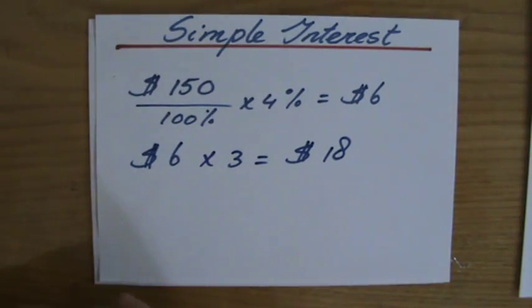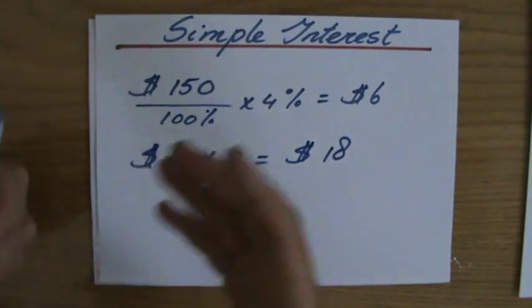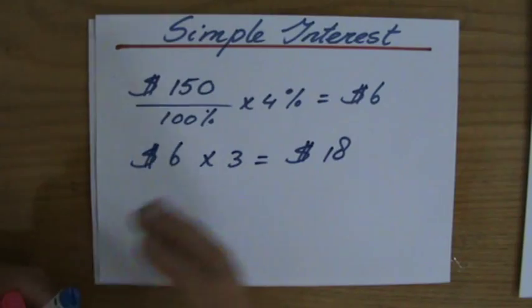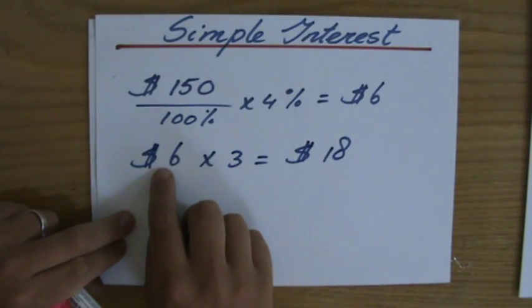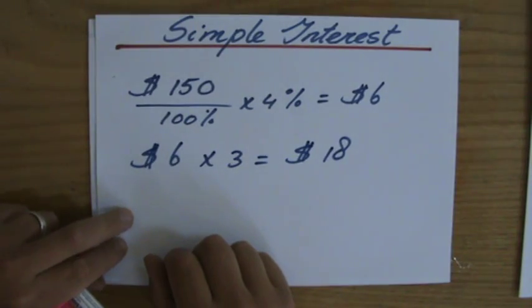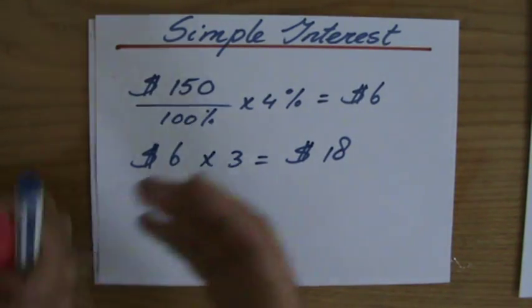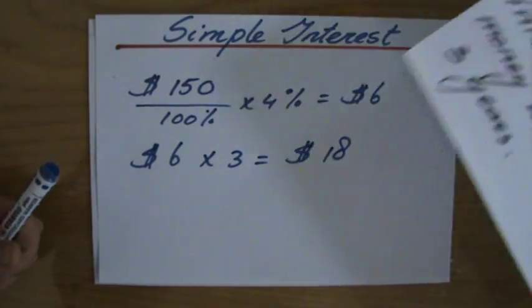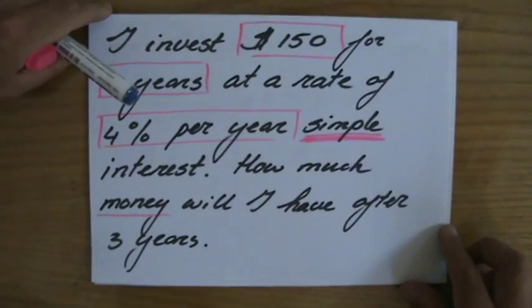If I had left my money there for five years, a little bit longer, then I would have done $6 for one year times 5, which would be $30 the bank would give me as simple interest.